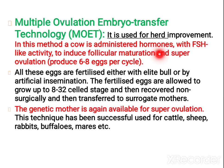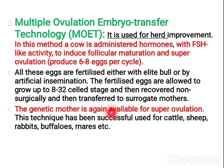This method is mainly used to improve the herd. In this, 6 to 8 eggs are produced by super ovulation and later, by means of artificial insemination, the eggs are fertilized. It is allowed to grow up to the 8 to 32 cell stage and then recovered from the mother non-surgically and transferred into surrogate mothers. The genetic mother can once again be used for super ovulation. This technique has been successfully used for increasing the good herd in cattle, sheep, rabbit, and buffaloes.